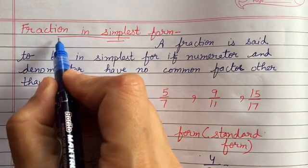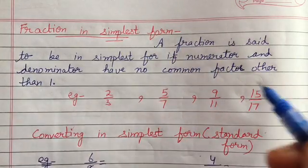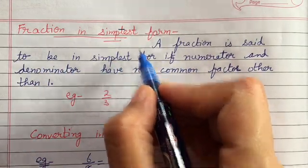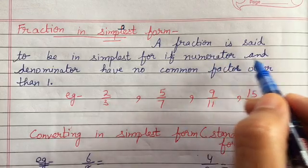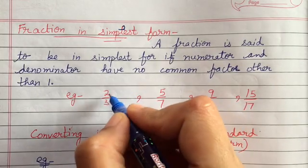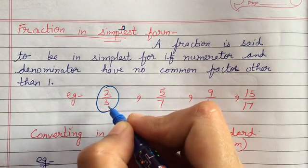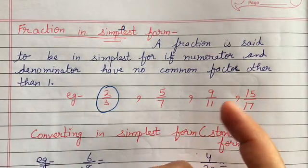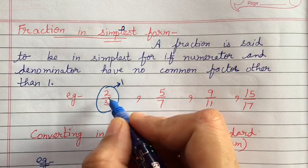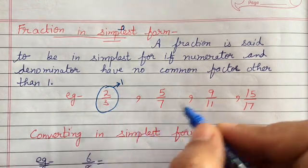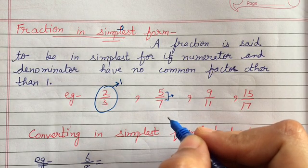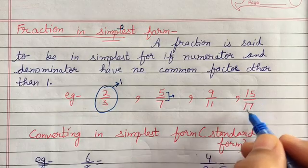Next — very important — is fraction in simplest form. A fraction is said to be in simplest form if the numerator and denominator have no common factors other than 1. That means for numerator and denominator there should be only one common factor, which is 1. For example: 5 by 7 — 5 and 7 don't have any common factor except 1. Similarly 9 by 11 and 15 by 17.